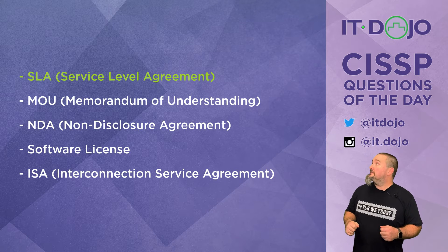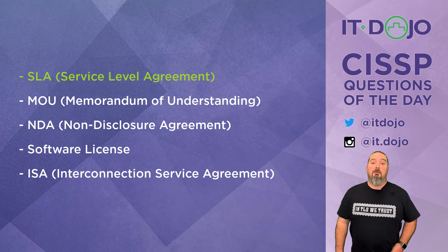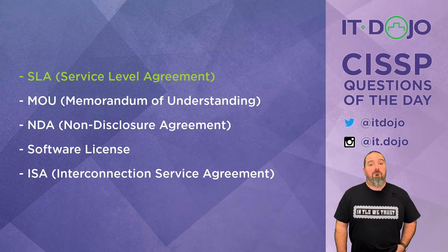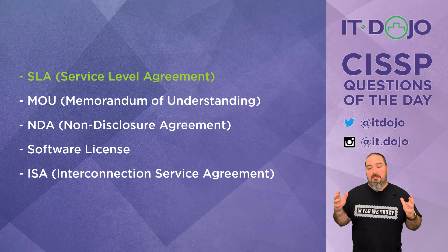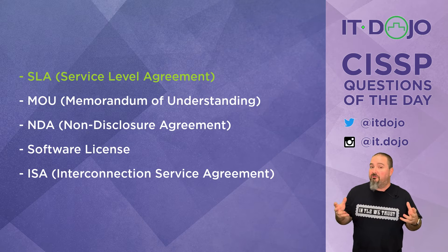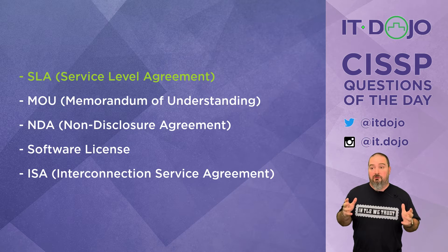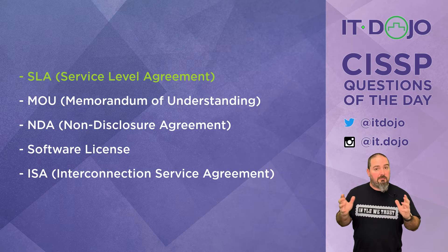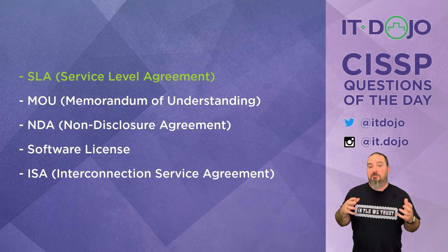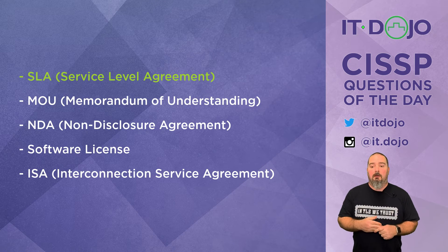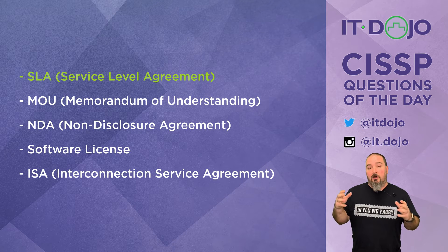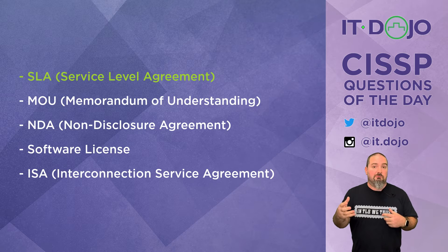The next answer choice is a memorandum of understanding, an MOU, and that is not one of the correct answers. From a CISSP perspective, the key thing to know about MOUs is that they are generally regarded as non-legally binding. They are an agreement between two entities — two organizations — to work towards a particular goal through a voluntary, collaborative arrangement.